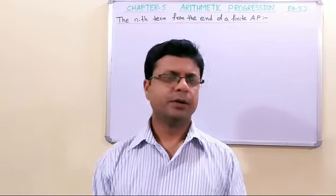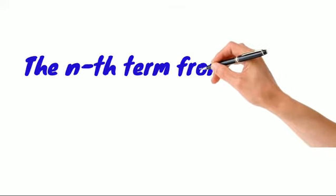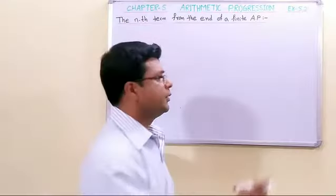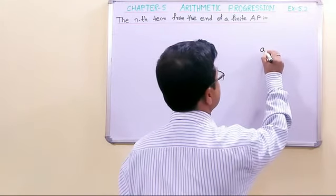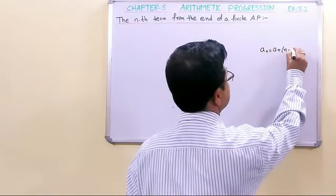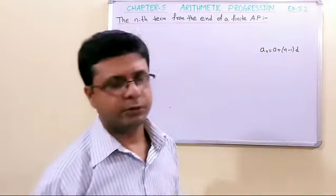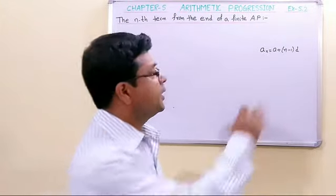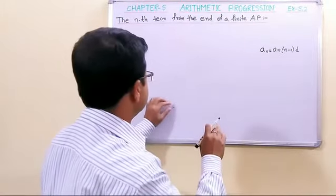Hello students, we have taken a new topic: the nth term from the end of a finite AP. All of you know how to find the nth term from the beginning — aₙ = a + (n-1)d — where a is the first term and d is the common difference. Today we have taken a new topic: how can we find the nth term from the end.